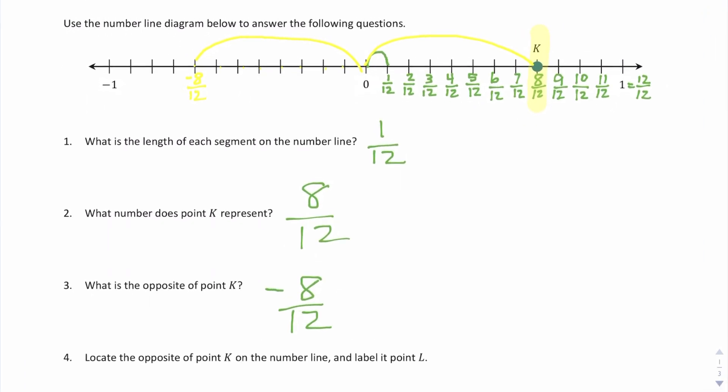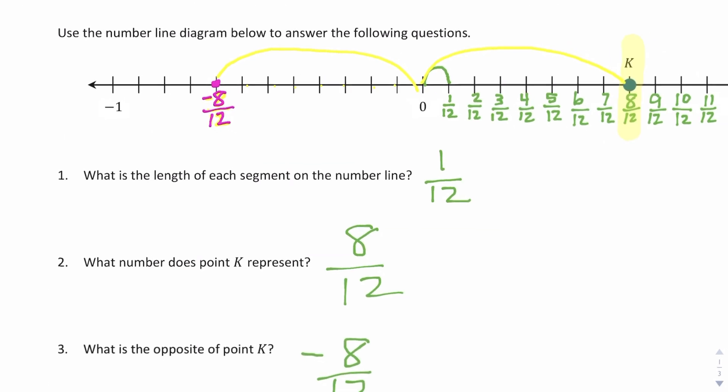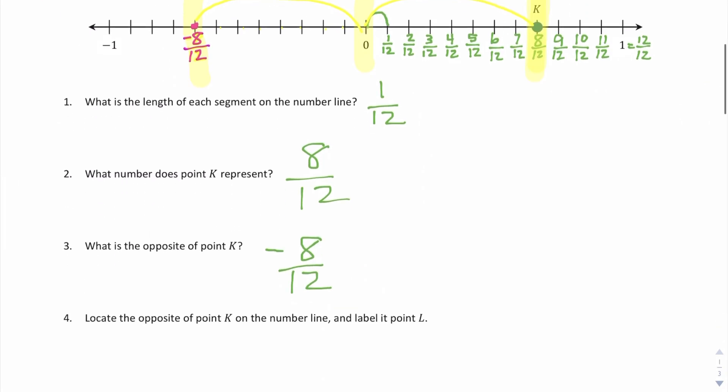Question number four, locate the opposite of point K on the number line and label it point L. Go ahead and switch up color here. There it is. And to make it easier to see, there it is, negative eight twelfths. All right, I have the opposite of K, which is negative eight twelfths. I have zero identified on my number line. And then I also have my original K, which is eight twelfths. So number four, mission accomplished.